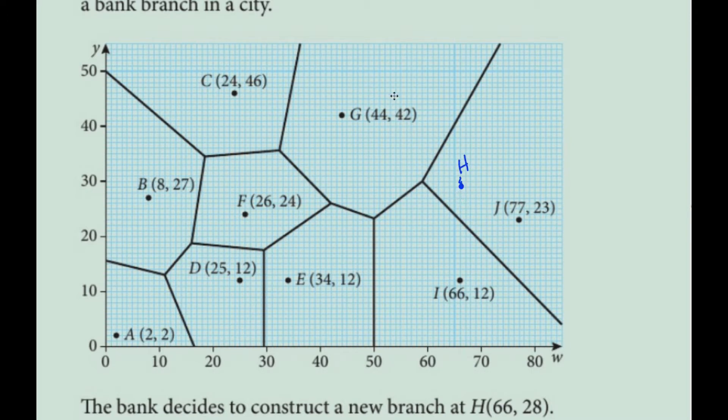Now what I want to do is create my perpendicular bisectors. I'm going to estimate these and just sketch them out here. Between H and G, J, here's the middle, and I'm going to make it perpendicular until I hit the boundary.